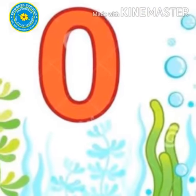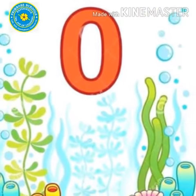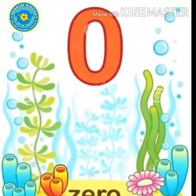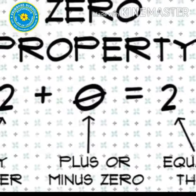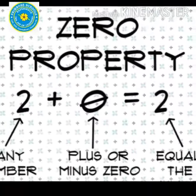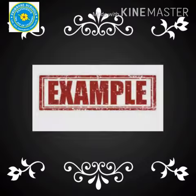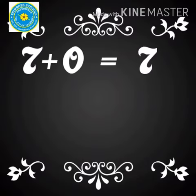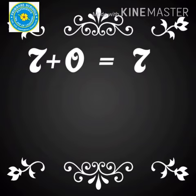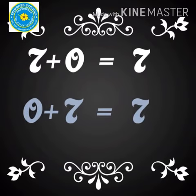Zero property of addition: a number does not change when zero is added to it. For example, 7 plus 0 is 7, and zero plus 7 is also 7.